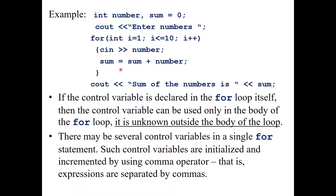A single for statement can have multiple control variables. All of them must be initialized, given conditions, and incremented. Multiple initializations are separated by commas, and multiple update expressions are also comma-separated. The three groups — initialization, condition, and update — are separated by semicolons. No semicolon goes after the closing parenthesis.